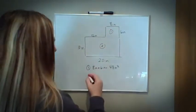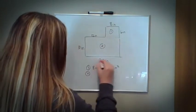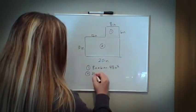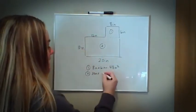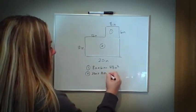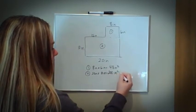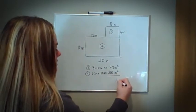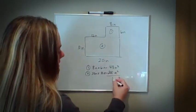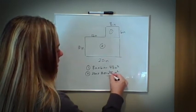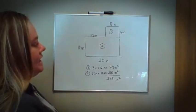Shape number two is again a rectangle: length is 20 inches times width, which is 10 inches. Twenty times ten is 200 inches squared. So I know I'm dealing with area in inches squared. I'm simply going to add: 8 plus 0 is 8, 4 plus 0 is 4, 2 plus 0 is 2. So my total shape is 248 inches squared.